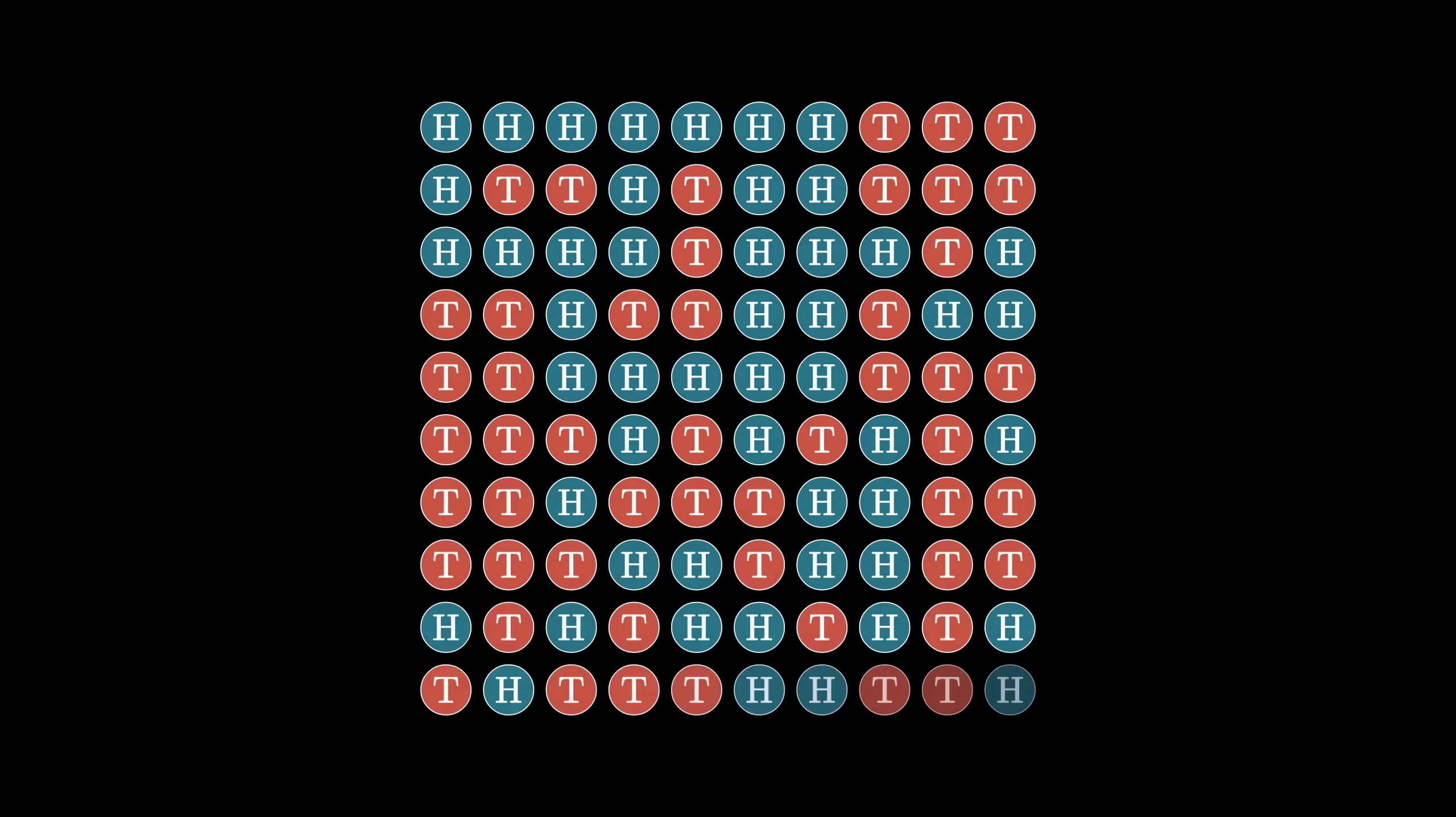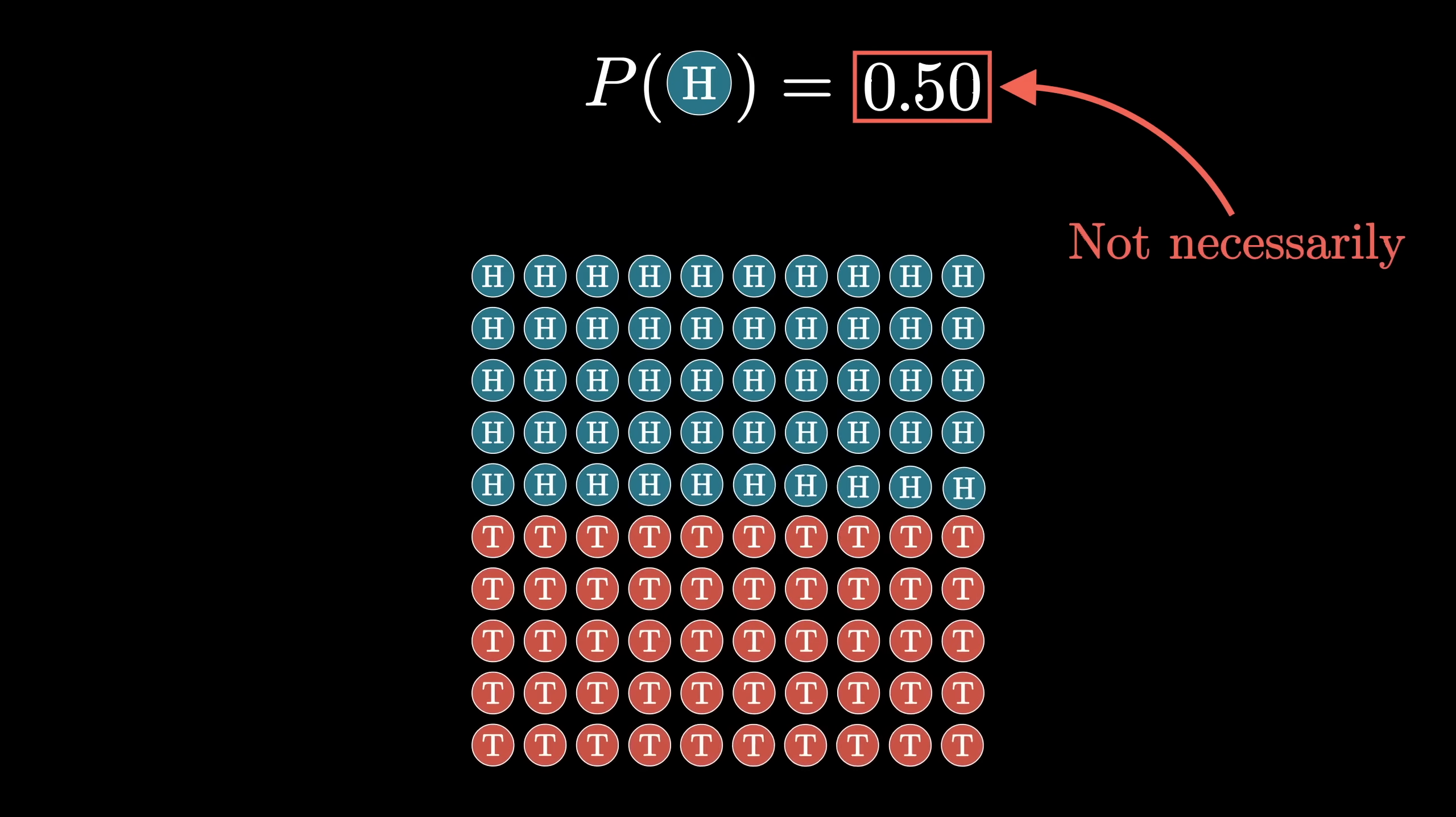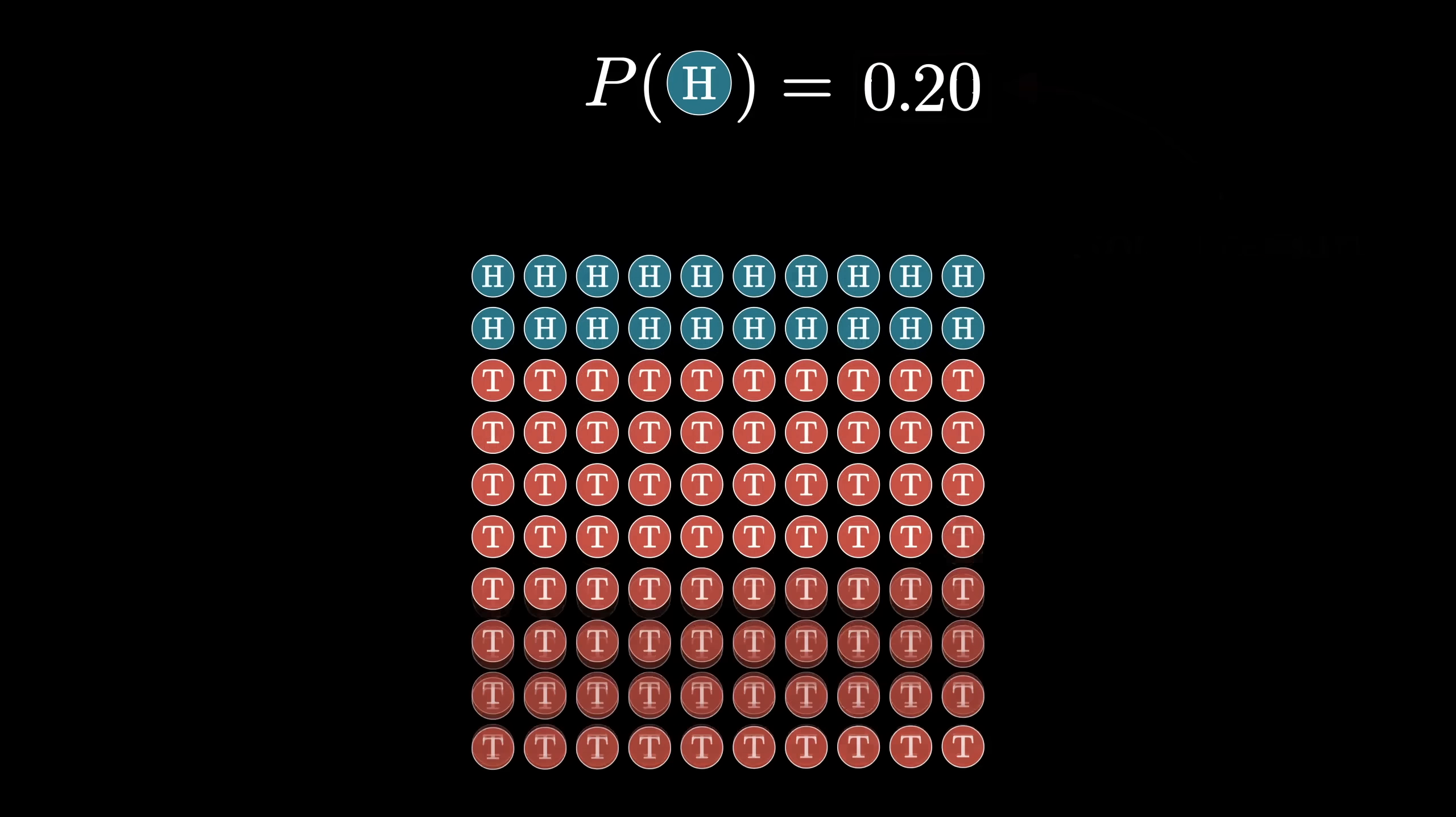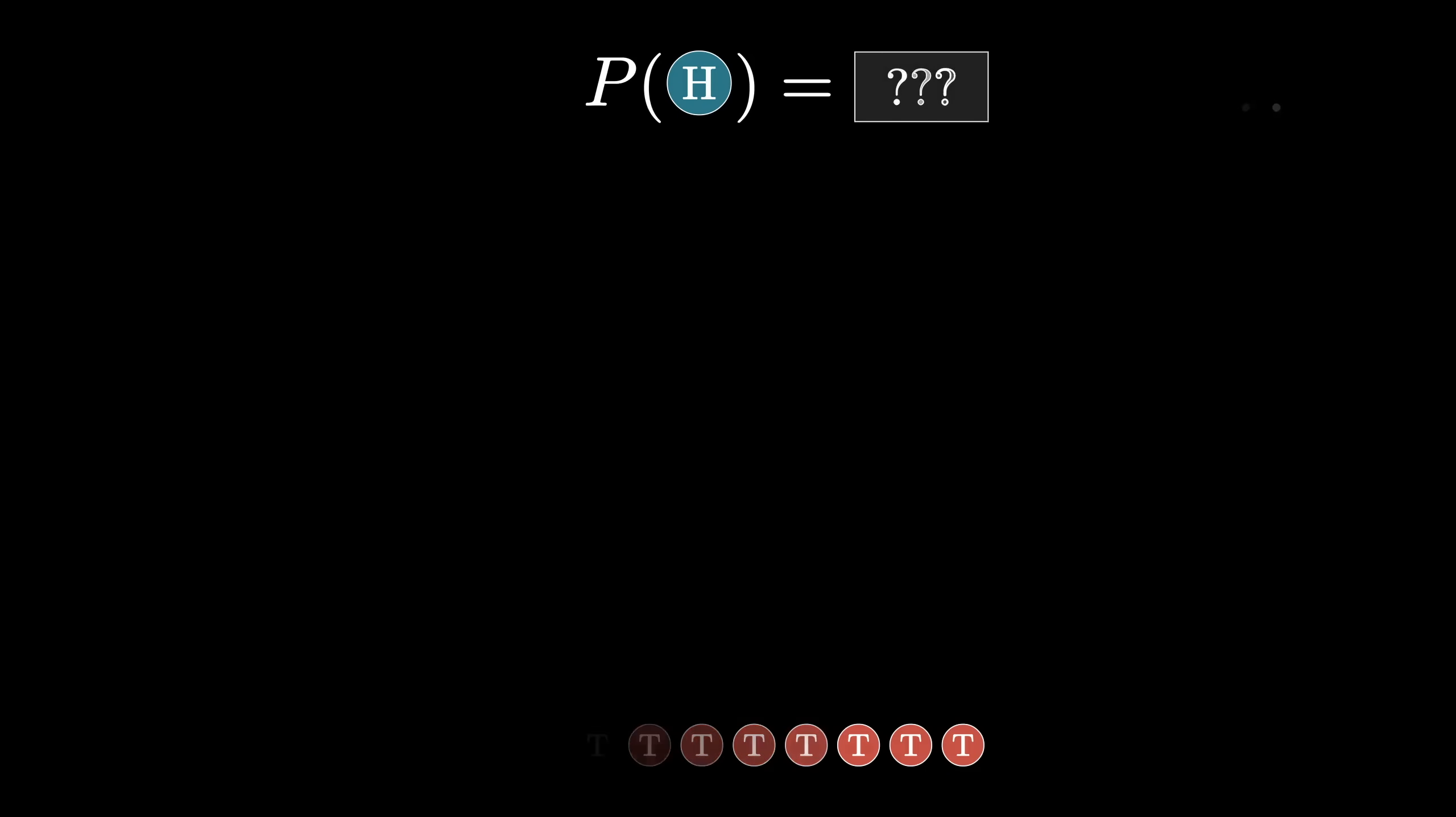Imagine you have a weighted coin. So the probability of flipping heads might not be 50-50 exactly. It could be 20%, or maybe 90%, or 0%, or 31.41592%. The point is that you just don't know.